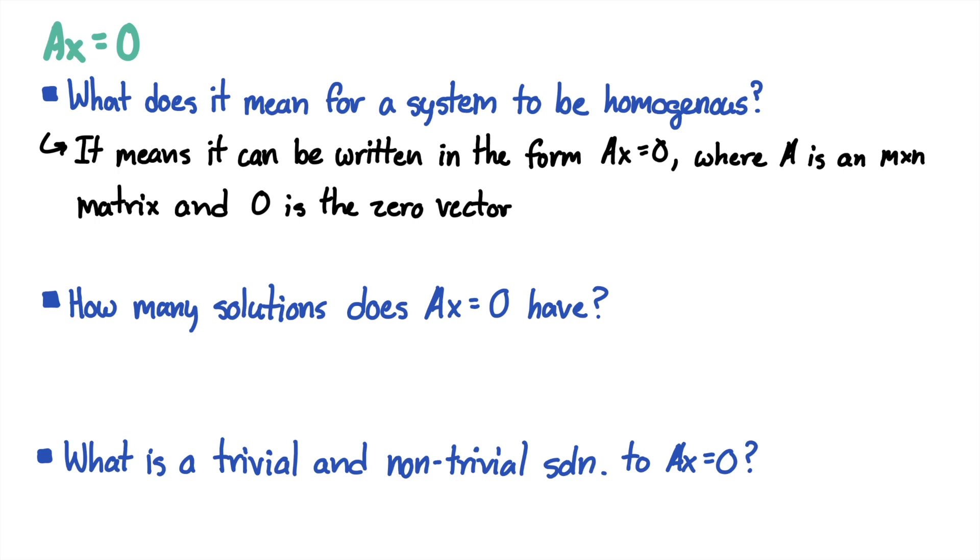How many solutions does AX equals 0 have? At least one solution, usually X equals 0.